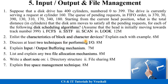The next question is: list the characteristics of block and character devices and explain each with examples for 6 marks. Next: discuss at least two techniques for performing I/O for 8 marks. Next: explain the input-output buffering mechanism for 7 marks — this is also a most important question. Then: list and explain any two file allocation mechanisms for 8 marks, write a short note on directory structure or file sharing for 8 marks, and explain free space management techniques for 8 marks.